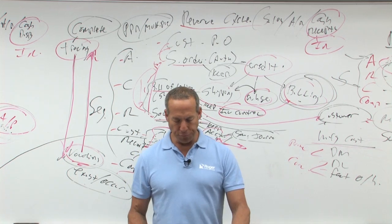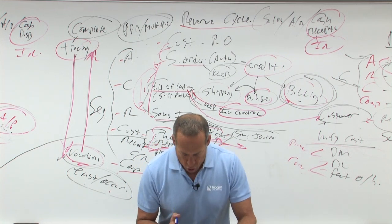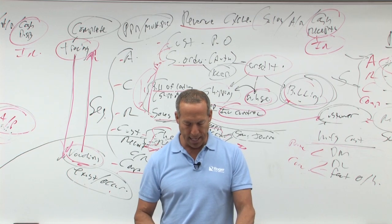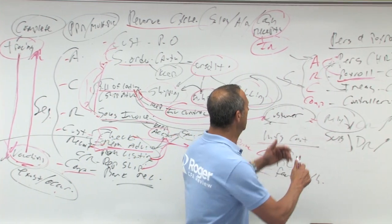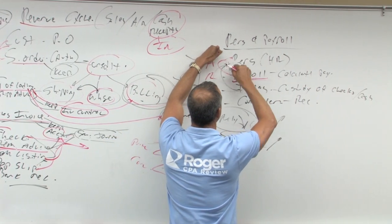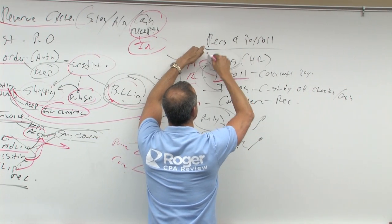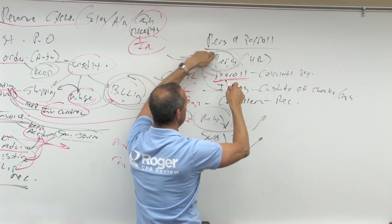Number 17. Which of the following departments most likely would approve changes in pay rates and deductions from employees' salaries? Who would normally do that? That would be personnel, hires, fires, determined salaries, Alan looks at pay rate changes, boom, personnel.